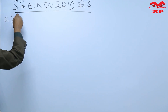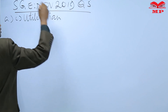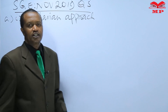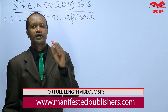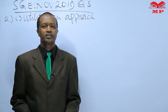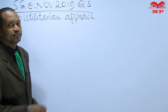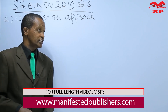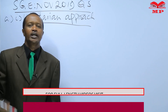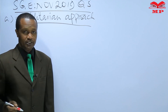Roman 1: Utilitarian Approach. The utilitarian approach is a concept. The theory states that moral behaviors produce the greatest good for the greatest number. The utilitarian approach determines right from wrong by focusing on the outcomes or behaviors.